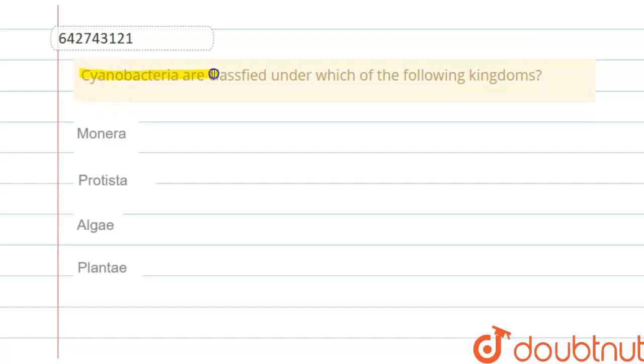Question is: cyanobacteria are classified under which of the following kingdoms - that is Monera, Protista, Algae, or Plantae?